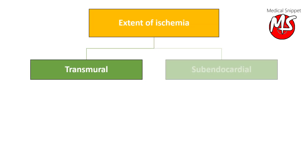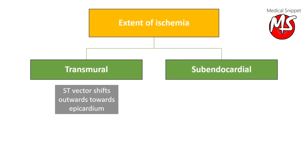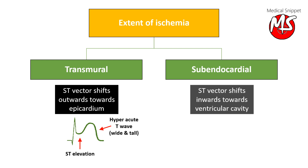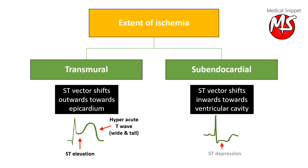In transmural infarction, the ST vector shifts outwards towards the epicardium, so there is ST elevation and sometimes a hyperacute T wave. It should be noted that reciprocal ST depressions can appear in leads corresponding to the contralateral surface of the heart. In subendocardial infarction, the ST vector shifts inwards towards the ventricular cavity, so there is ST depression in the ECG.